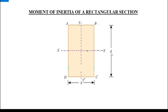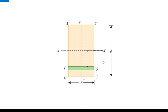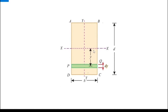We consider a rectangle of dimension b × d. The axes are XX and YY — they are centroidal axes. For deriving the moment of inertia of this rectangle, we consider an elemental strip PQ, which you can see in green color. It is at a distance y from the X-axis, with thickness dy and breadth equal to b, the breadth of the rectangle.